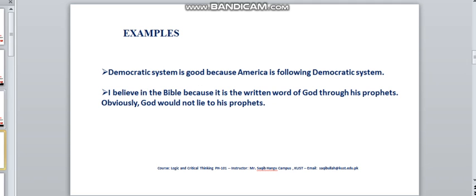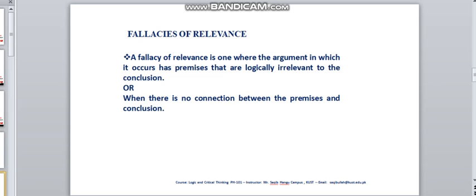Now, coming to the types of Informal Fallacies, there are three major types: Fallacies of Relevance, Fallacies of Presumption, and Fallacies of Ambiguity. Now, coming to the very first type of Fallacies, Informal Fallacies, that is Fallacies of Relevance.